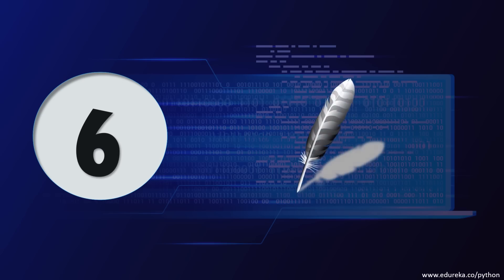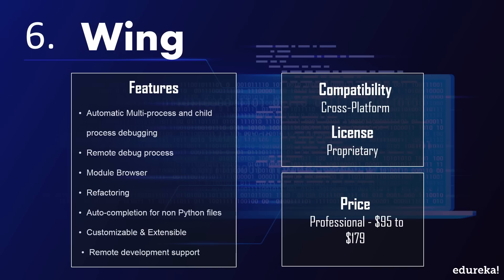At the 6th position is Wing. This cross-platform IDE was created by Wingware. It is lightweight and designed for quick programming. It comes in three variants: Wing Pro, Wing Personal, and Wing 101. Wing Pro is a professional version priced between $95 and $179. Wing Personal and Wing 101 are simplified free versions for students and beginners. Wing features automatic multi-process and child process debugging, remote debugging, a module browser, refactoring support, and autocompletion for non-Python files.